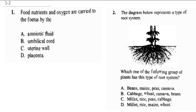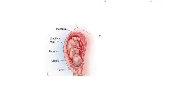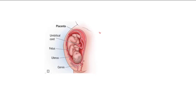We have several options here, but in order to explain this question better, you can see from this diagram — this is the placenta. The placenta is responsible for providing the food, and the food goes through the umbilical cord. You can see the umbilical cord carrying the food to the baby.